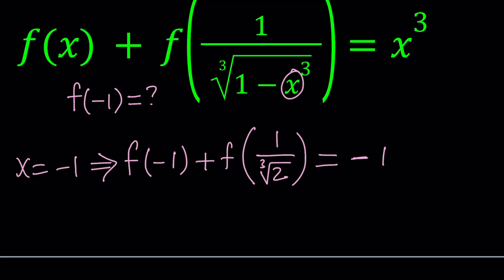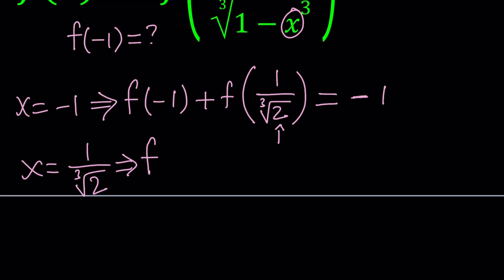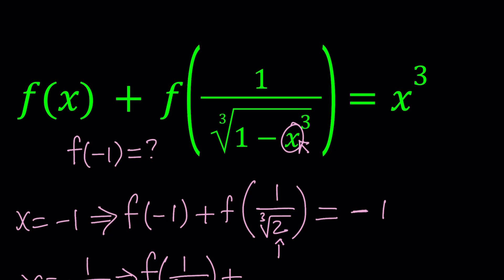This gives us f(−1) along with f(1/∛2), so the next step is replacing x with 1/∛2. If you replace x with 1/∛2, the first term gives f(1/∛2). For the second argument, cubing 1/∛2 gives 1/2; then 1 − 1/2 = 1/2, and the cube root of 1/2 is 1/∛2. So 1 over that is the cube root of 2.